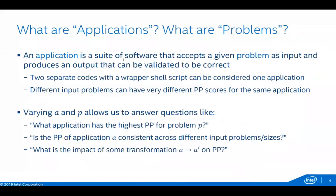When we say 'application,' we mean anything that can accept an input problem and produce output — deliberately vague to allow for a shell script or library API that calls different applications on different platforms. For example, a BLAS library making calls to either MKL or cuBLAS depending on whether it's running on an Intel CPU or NVIDIA GPU has higher performance portability than MKL or cuBLAS alone. Input problem is an input to the metric because changing it can send code down very different paths, and some features may not yet be ported to a particular platform.